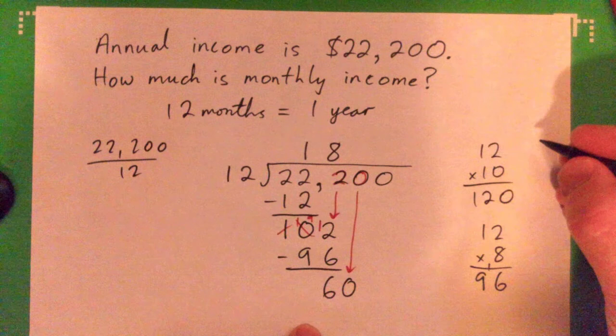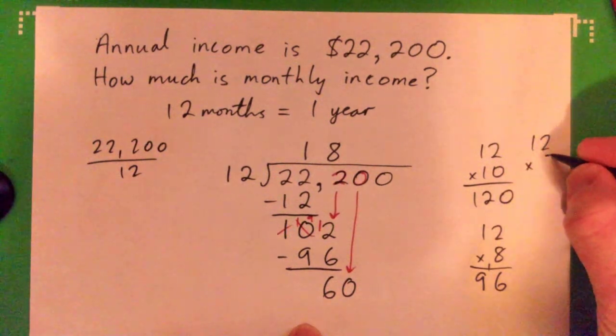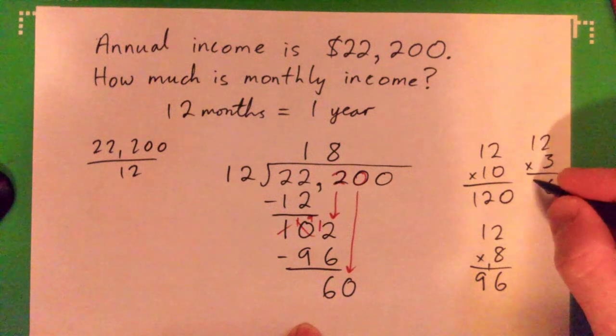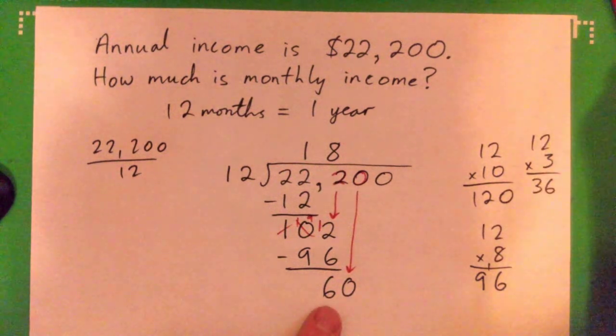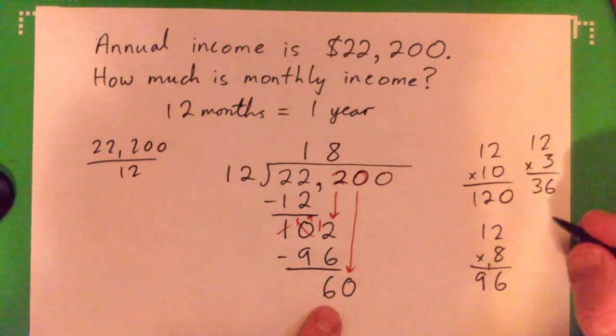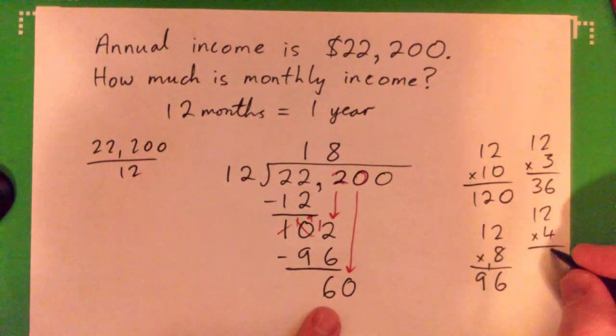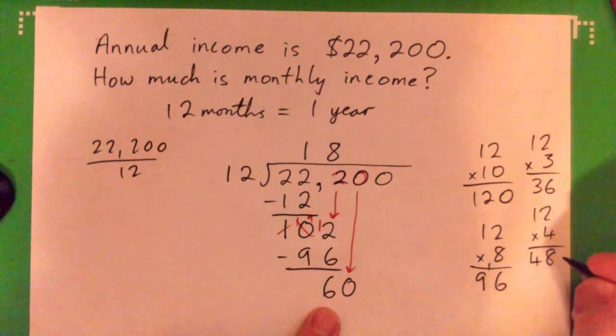3 times you think? 12 times 3: 3 times 2 is 6, 3 times 1 is 3, 36. 4? 12 times 4: 4 times 2 is 8, 4 times 1 is 4, 48.